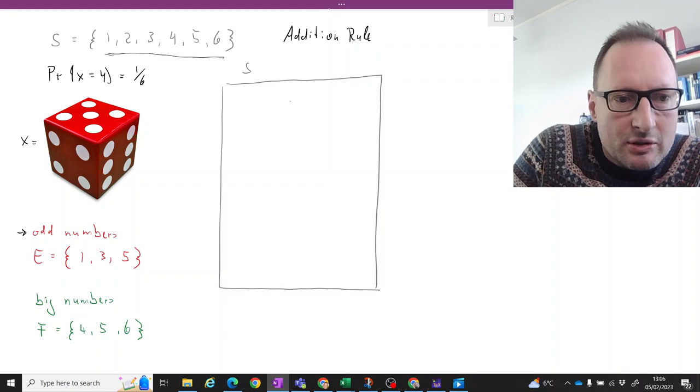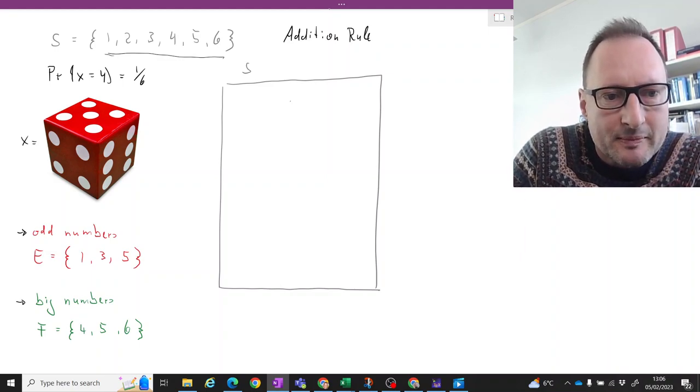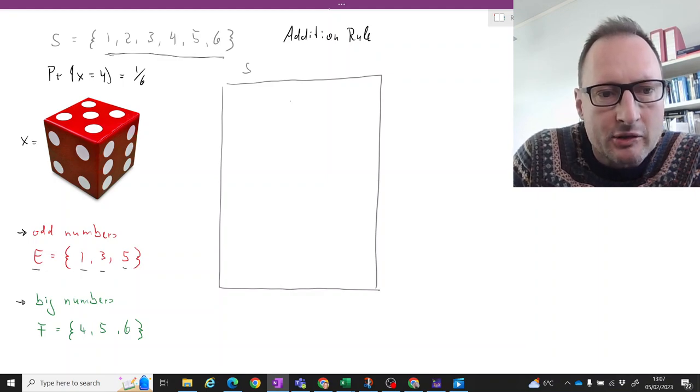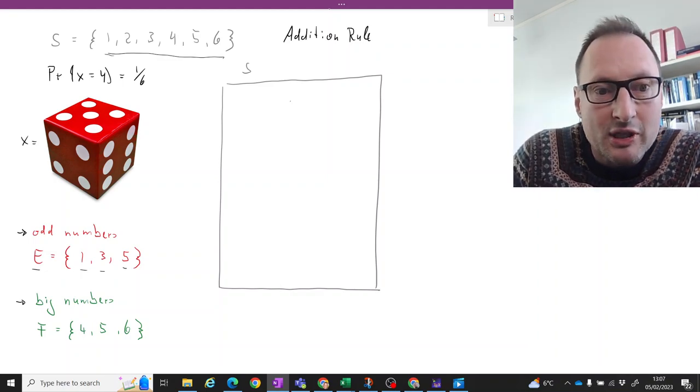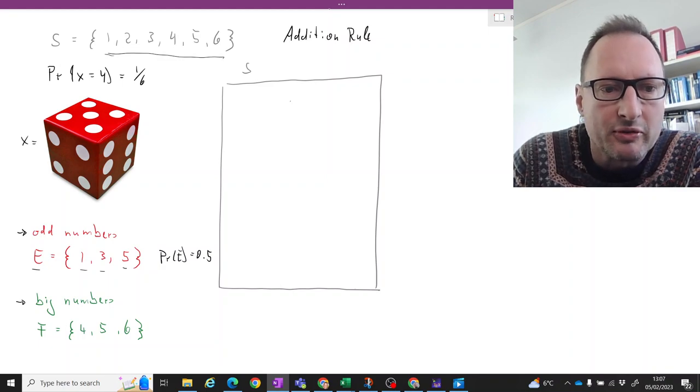So let's define two events: odd numbers or big numbers. Let's call the odd numbers event E, and that is if the outcome is 1, 3, or 5. And of course we know that's 3 out of 6, so the probability of E is going to be equal to 0.5.